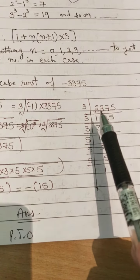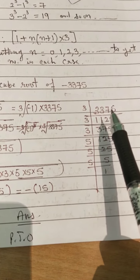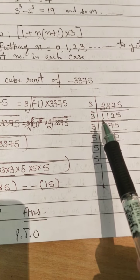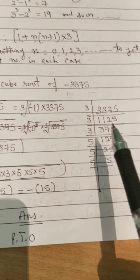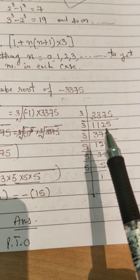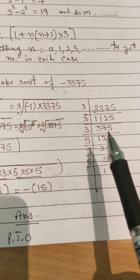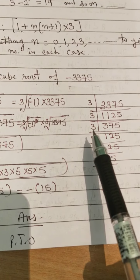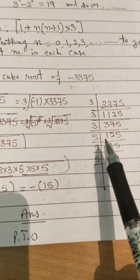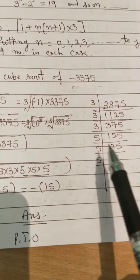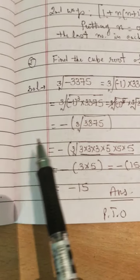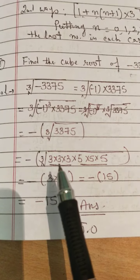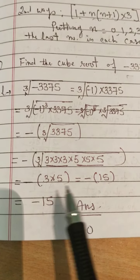Dividing 3,375 by 3 repeatedly: 3,375 ÷ 3 = 1,125; 1,125 ÷ 3 = 375; 375 ÷ 3 = 125; 125 is not divisible by 3, so divide by 5: 125 ÷ 5 = 25; 25 ÷ 5 = 5; 5 ÷ 5 = 1. So 3,375 = 3 × 3 × 3 × 5 × 5 × 5. Making triplets: one triplet of 3 and one triplet of 5. Cube root equals 3 into 5 = 15. So cube root of minus 3,375 is minus 15.